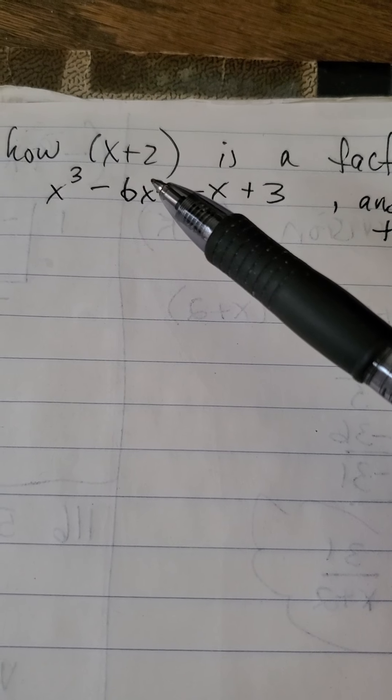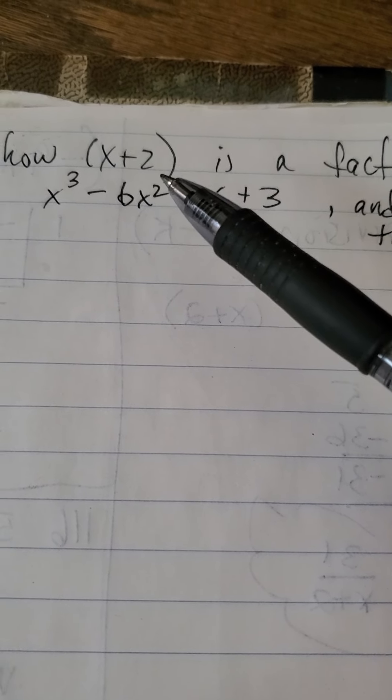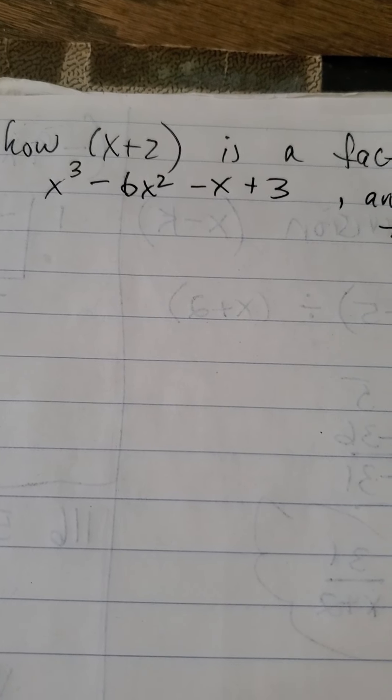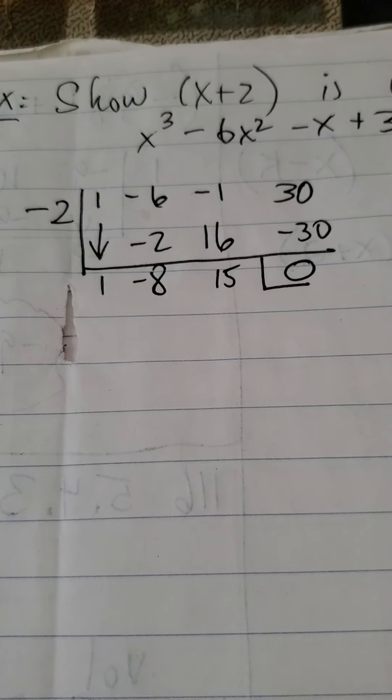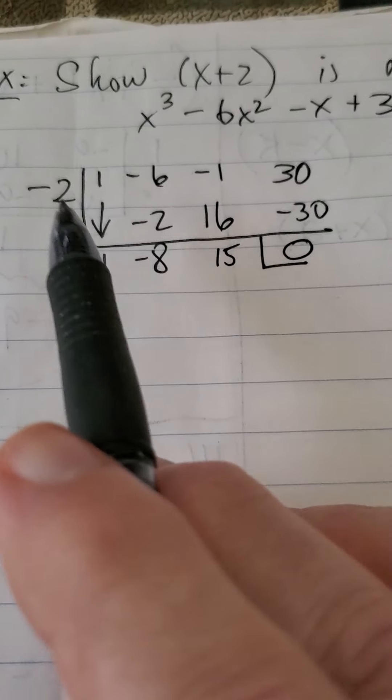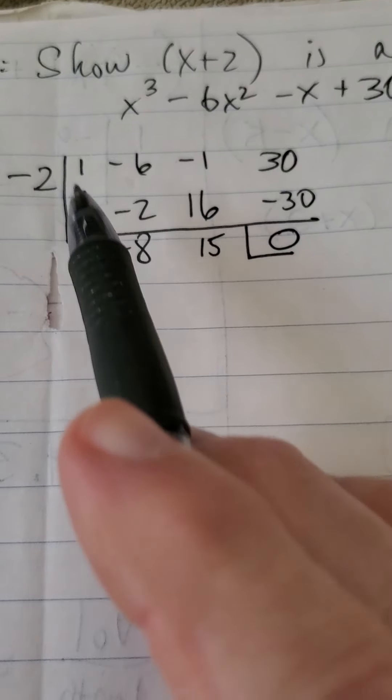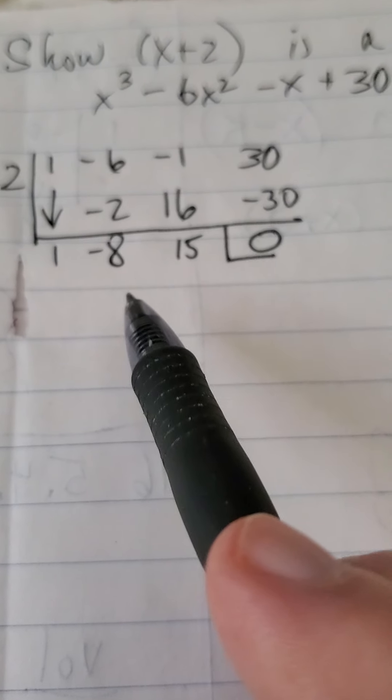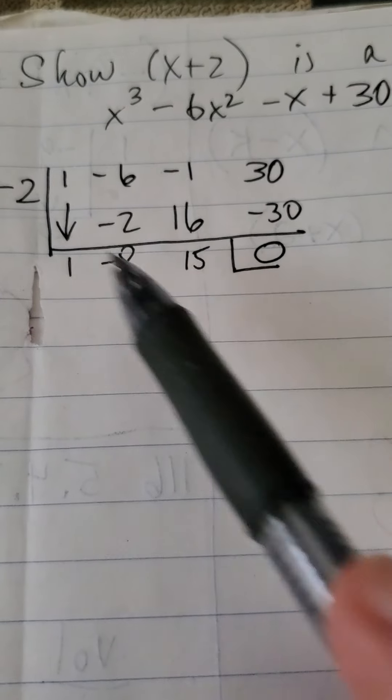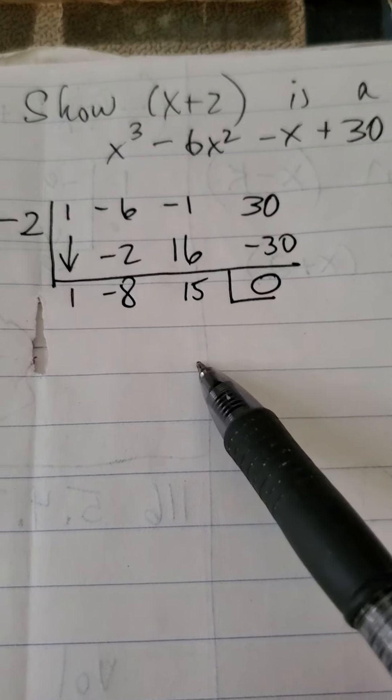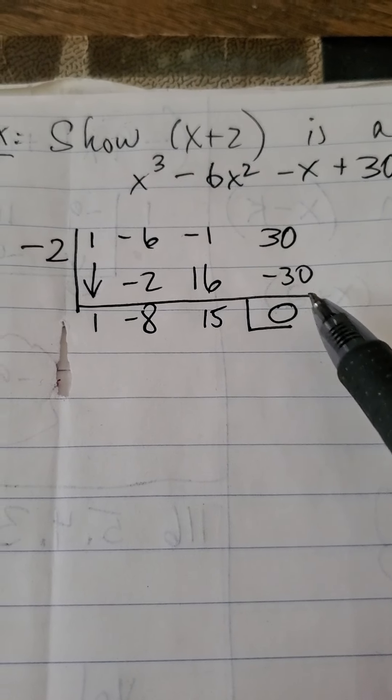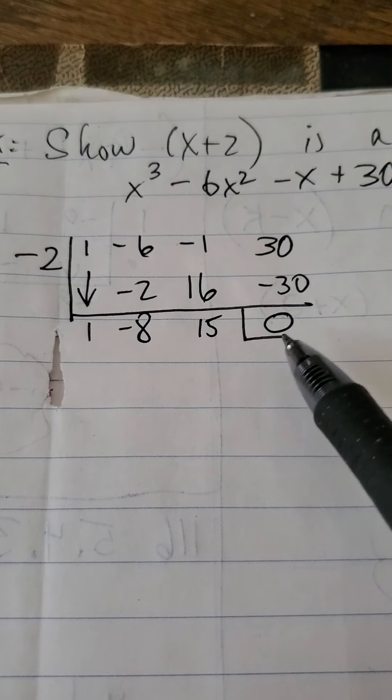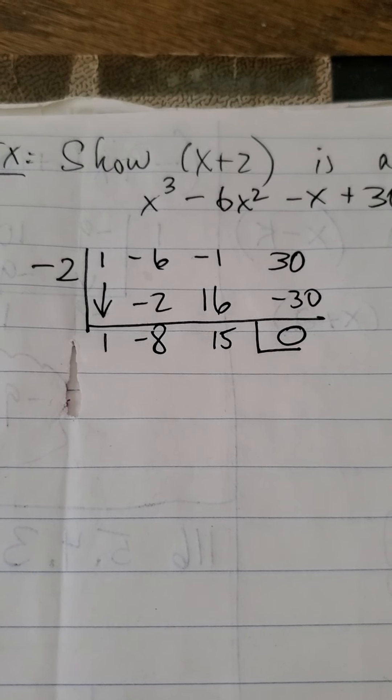So I'm going to do that using synthetic division. If I do synthetic division and I get a remainder of 0, that means it is a factor. That means negative 2 is a 0 and x plus 2 is a factor. Well, we see with synthetic division that negative 2 is indeed a 0 because I bring down the 1. Negative 2 times 1 is negative 2. And I get negative 8. Negative 2 times negative 8 is 16. And I get 15. Negative 2 times 15 is negative 30. And positive 30 and negative 30. And I get 0.